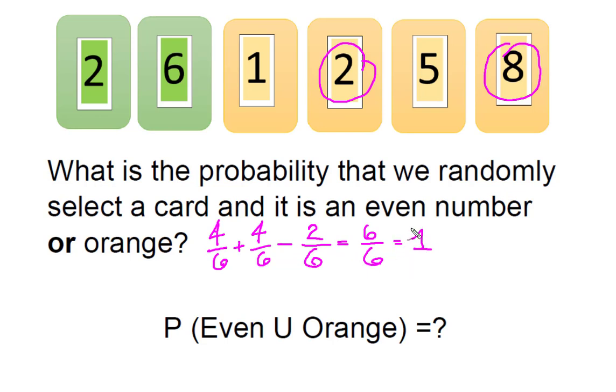So four and four is eight minus two is six out of six, which gives me one, which is okay, because I know that my conditions are even cards. So I'm going to put squares around the four even cards, and now those were my even ones.